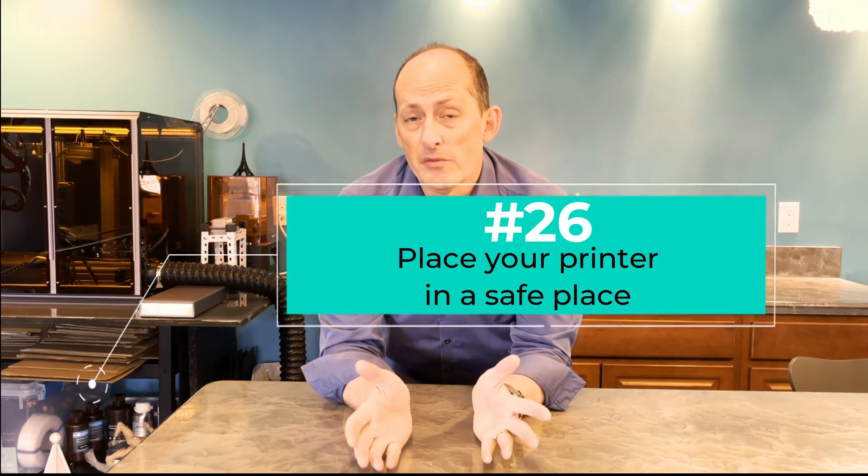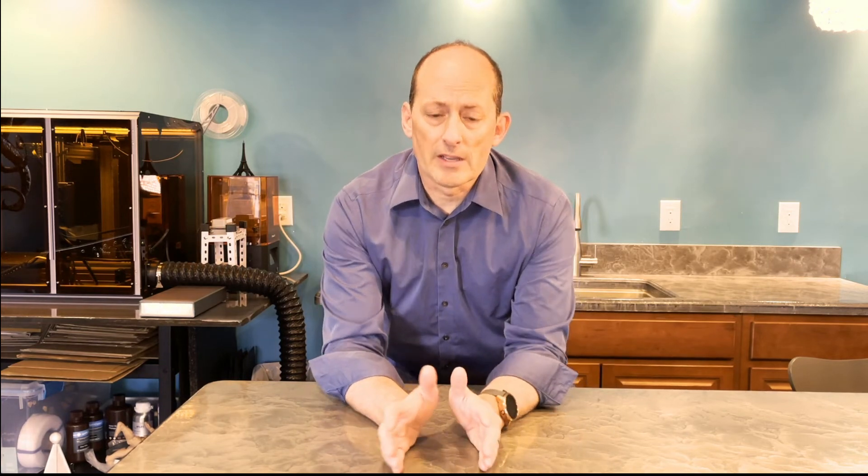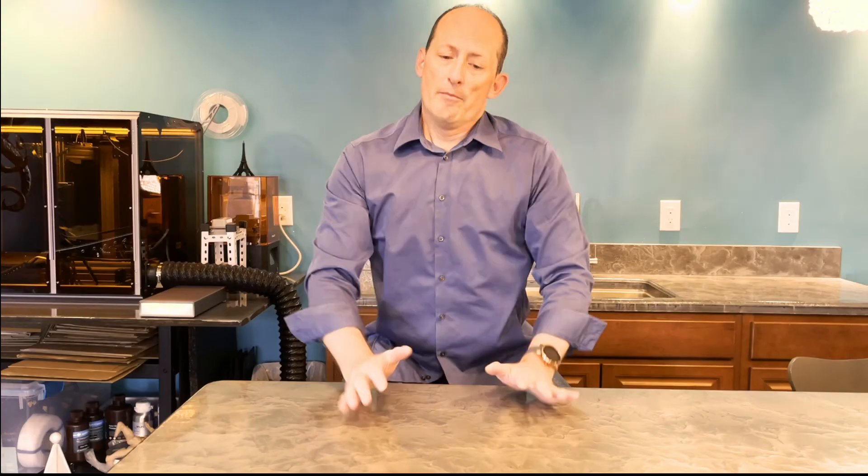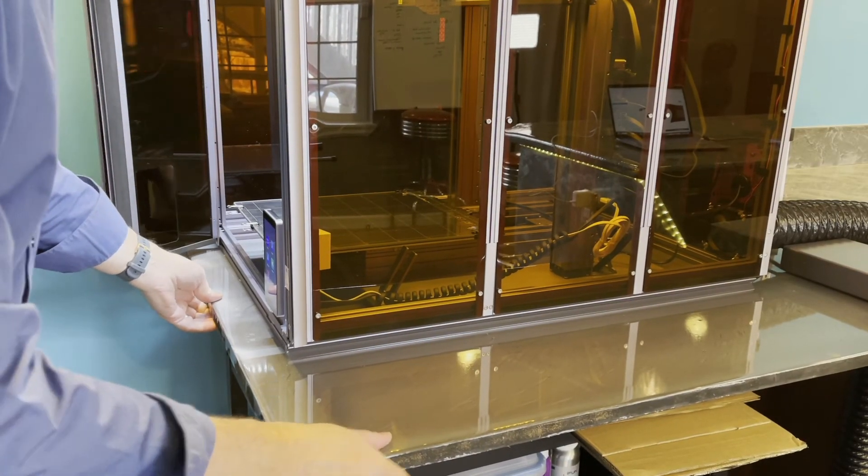Make sure the first thing you do once you've assembled this thing is to put it on a stable surface. Knowing that the 3D printer has moving parts on the X and the Y and the Z axis, we need to make certain that wherever we place this thing, it's stable, that the movement's not going to throw it off or that it could fall off.